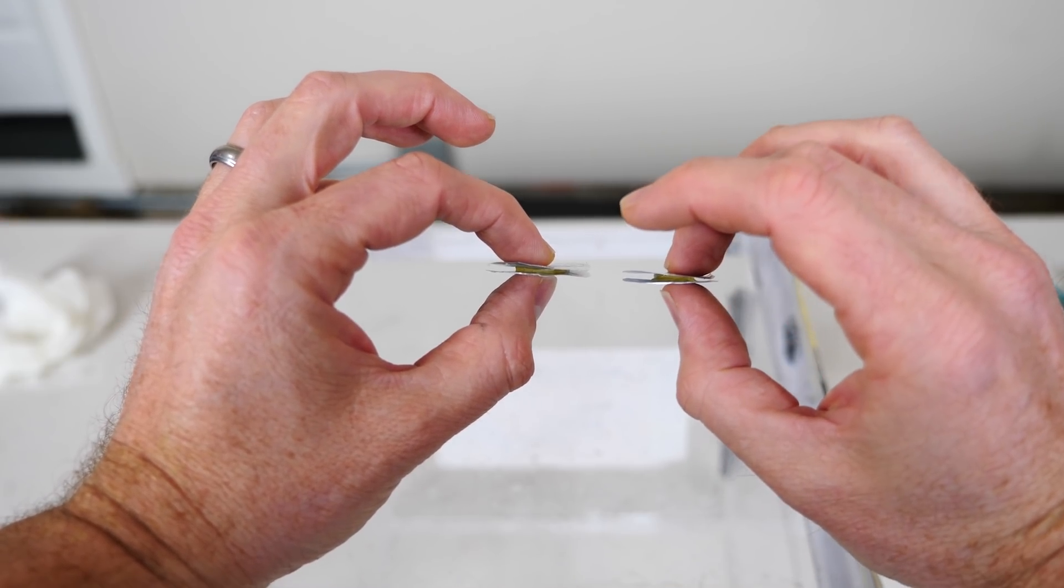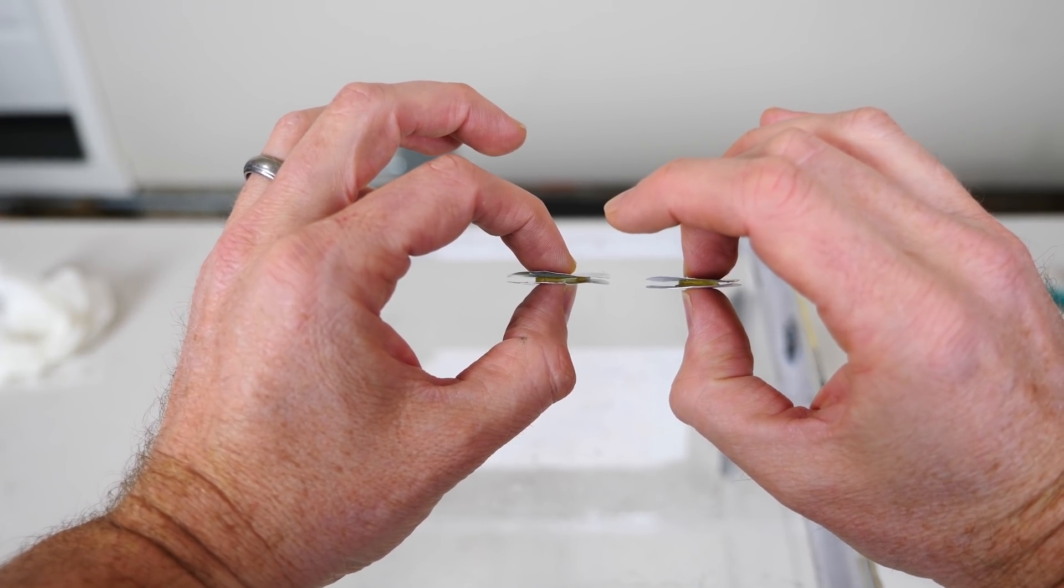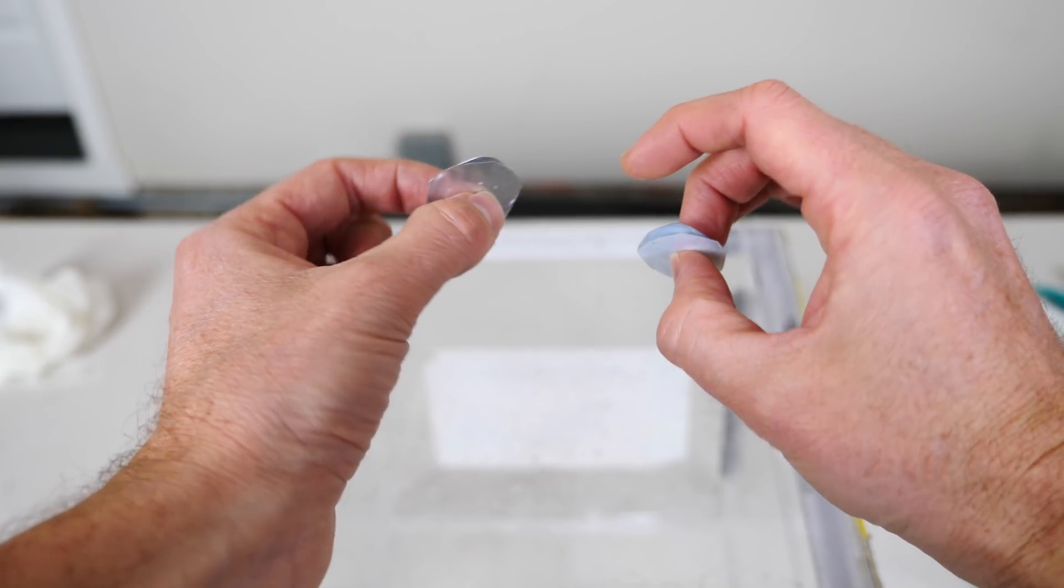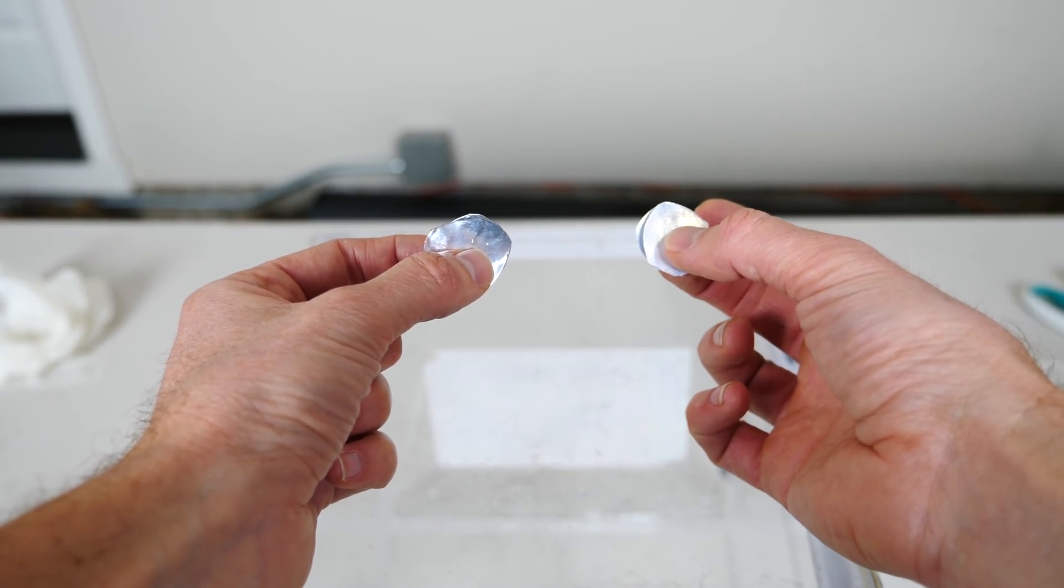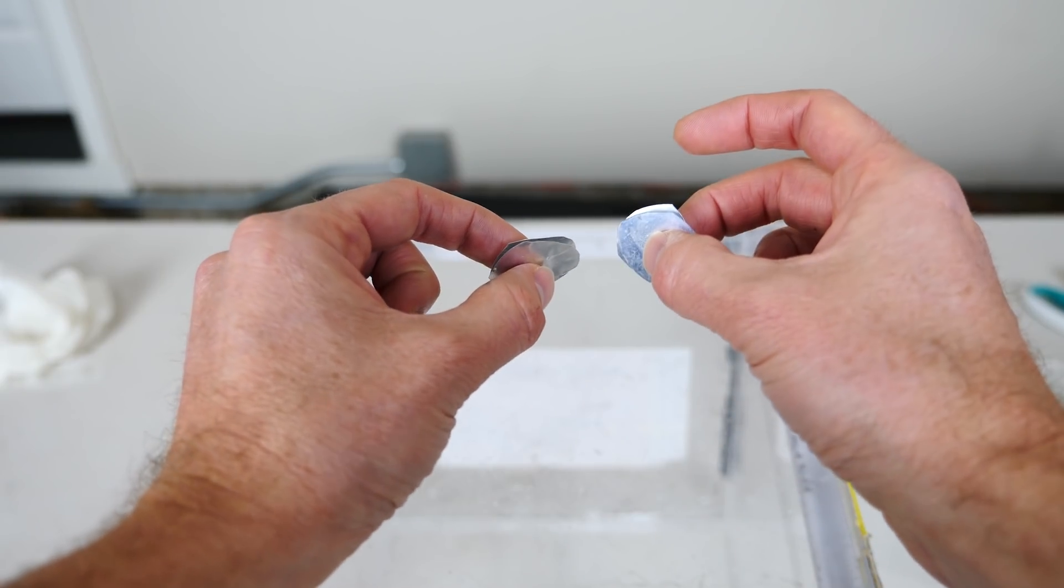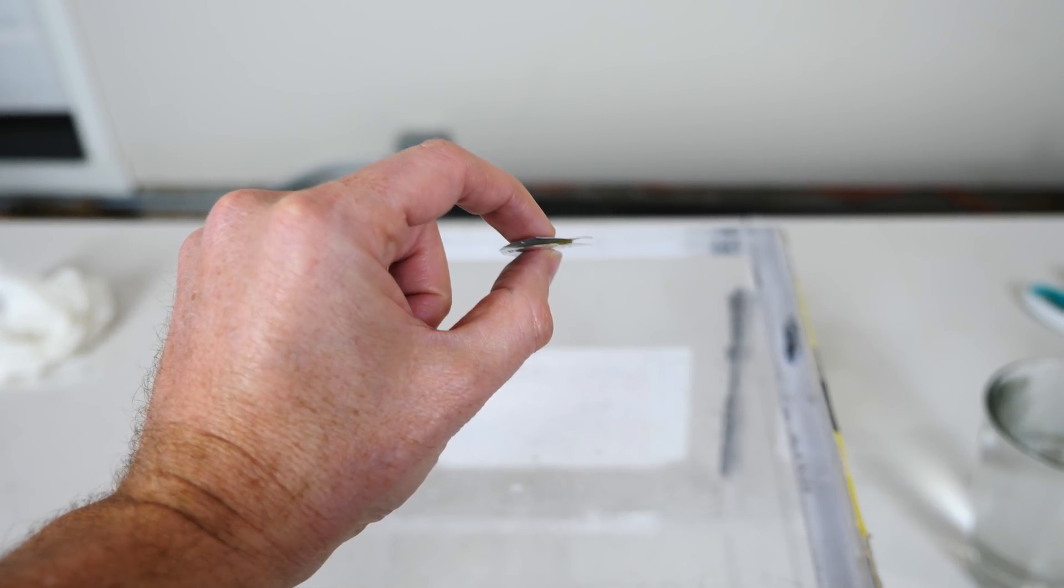So I have here two pieces of aluminum sandwiched together by an adhesive in the middle. The gap is about the same between them. The only difference between these two is I've treated this one with a super hydrophobic paint, and this one I didn't treat at all.